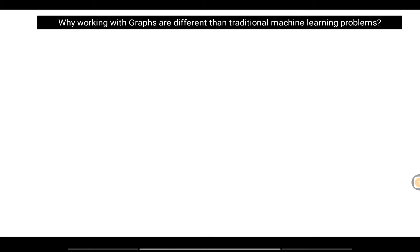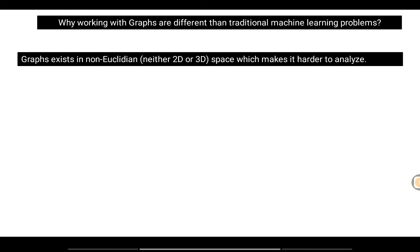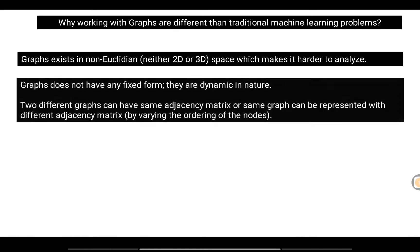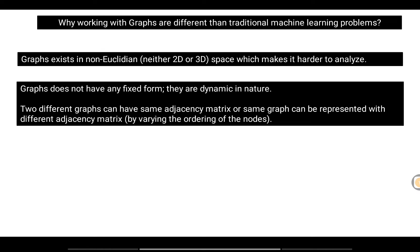Graphs are a bit different compared to traditional machine learning problems for two main reasons. First, graphs exist in a non-Euclidean space, making them harder to analyze. Algorithms like k-nearest neighbor, linear regression, or logistic regression exist in Euclidean space and use Euclidean distance. Graphs do not, so we have to tackle graph prediction problems in a different manner.